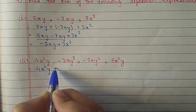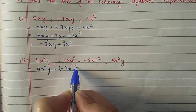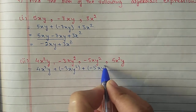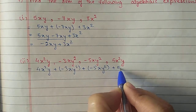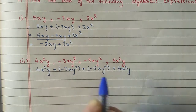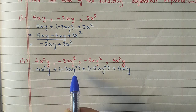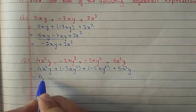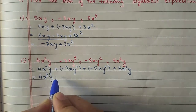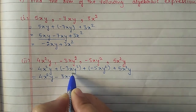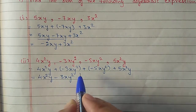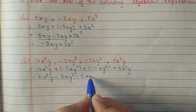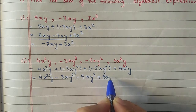Second part: 4x square y plus minus 3xy square plus minus 5xy square and plus 5x square y. If an expression has a minus symbol, always keep it in brackets first and later remove the bracket. So it becomes 4x square y minus 3xy square, then plus and minus becomes minus 5xy square, plus 5x square y.